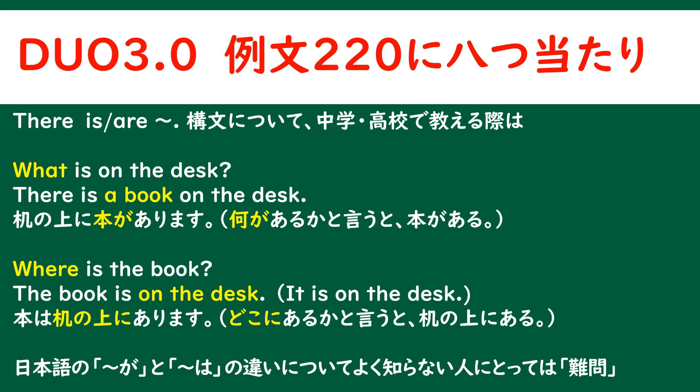ところでですね、中学や高校で、この構文について教えるとき、どのような内容を教えていたのかというのを、ちょっと思い出して、そこに書いてみたのですが、「What is on the desk?」机の上に何がありますか？と聞かれたら、「There is a book on the desk.」机の上には本があります。